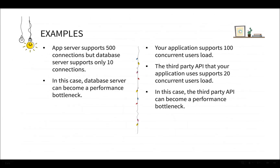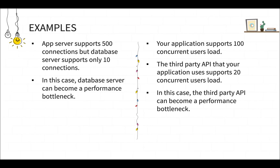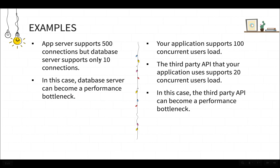Let's take an example of a performance bottleneck. Say your app server supports 500 connections but your database server only supports 10 connections. In this case, the database server can become a performance bottleneck, because your app server is capable of handling 500 connections but it is being restricted by the database server which supports only 10. So the database server is the performance bottleneck.